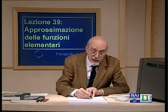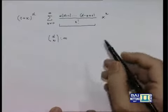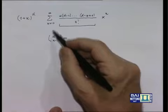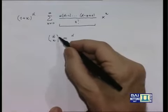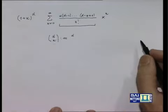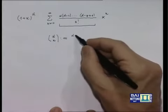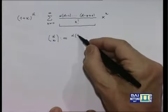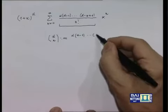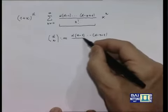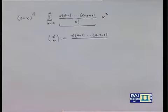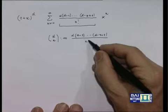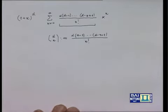Allora perché non estendere il significato di questa scrittura? Naturalmente non avrò più un'interpretazione combinatoria, ma dirò semplicemente che questo simbolo indica il coefficiente binomiale generalizzato di indice superiore alfa e indice inferiore n: al numeratore il prodotto di n fattori decrescenti a partire da alfa, tutti distanziati di un'unità; al denominatore n fattoriale.